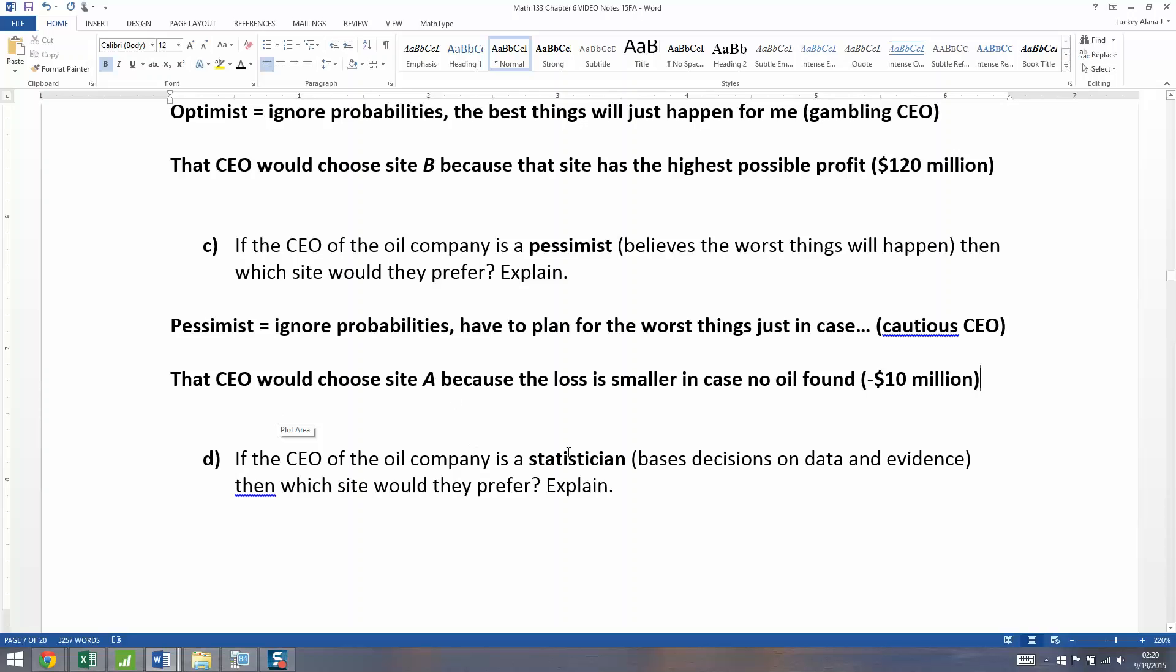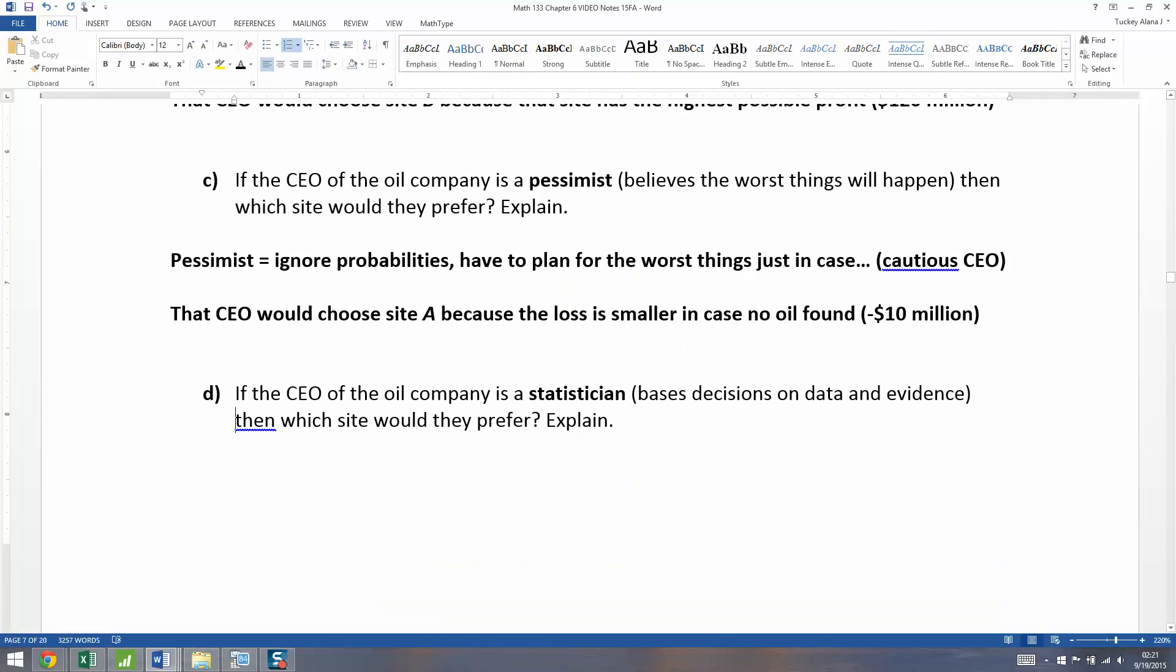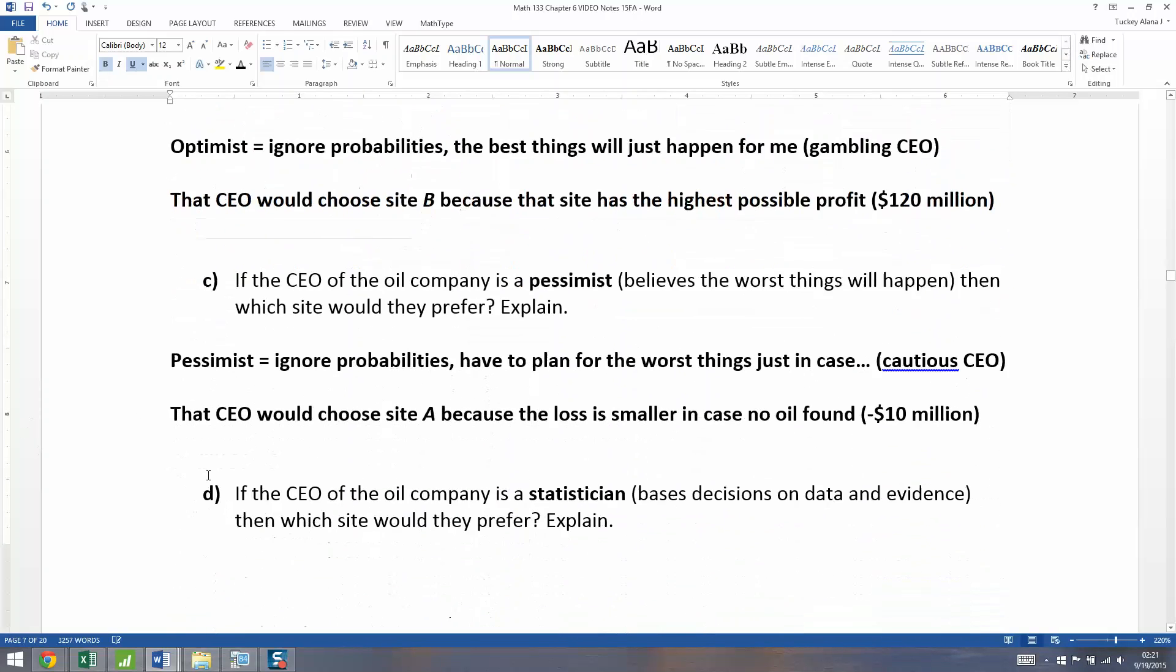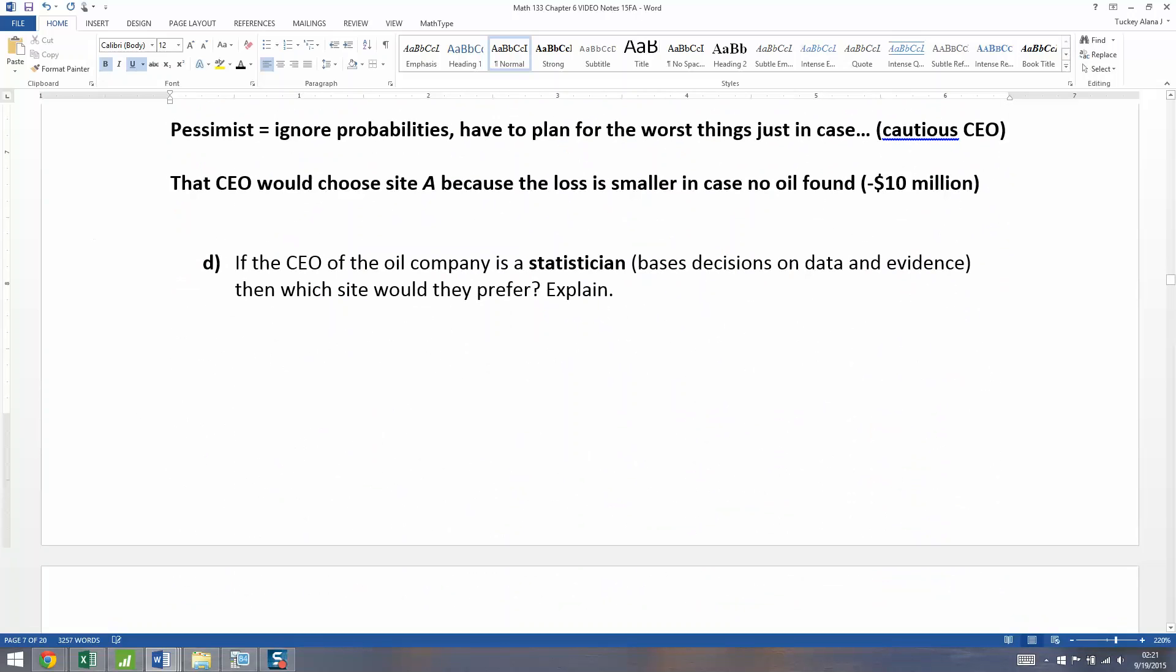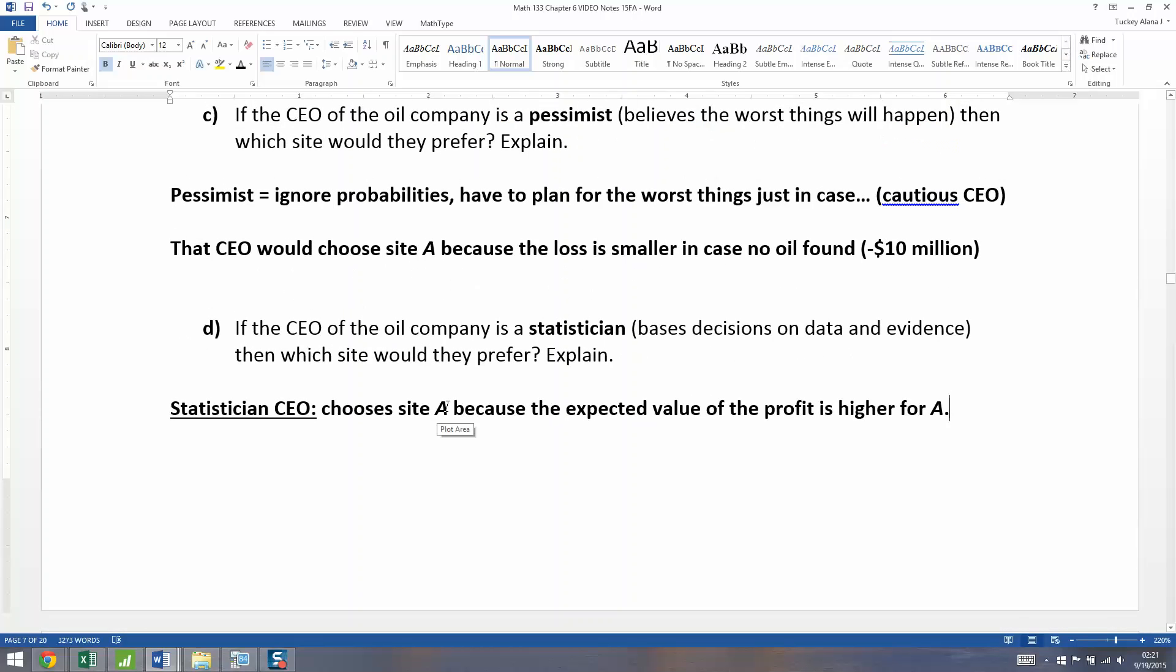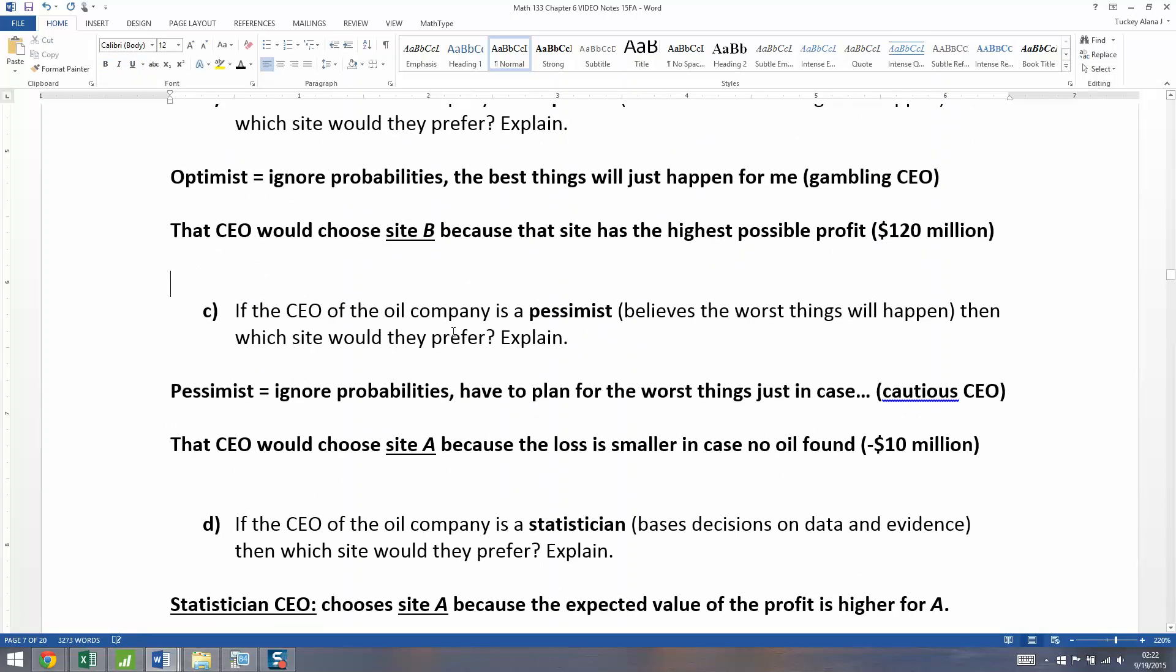Now, if the CEO is a statistician, bases its decisions on data and evidence, none of this ignore the probability stuff. If that's the case, then which site would they prefer? And the answer is absolutely site A, because the expected value is positive $8 million. So the statistician CEO would choose site A, because site A has the highest expected profit, just along with the pessimist that would also choose site A, whereas the optimist, site B all the way.